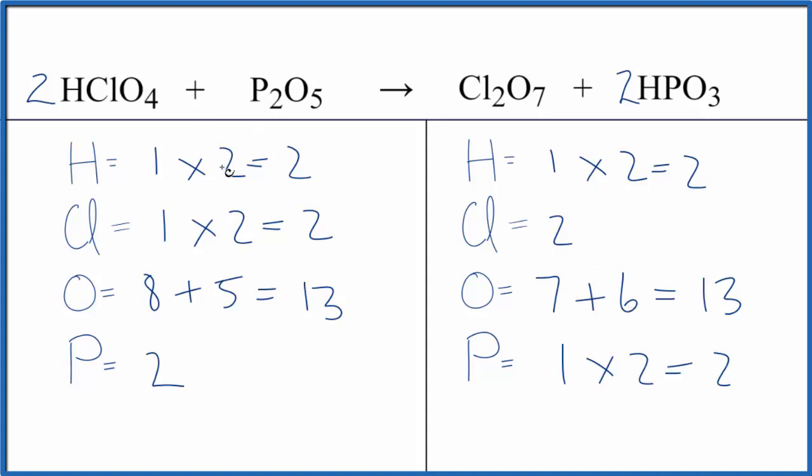I thought this was going to be a lot more difficult with all these oxygen atoms everywhere. But this is the balanced equation for the reaction HClO4 plus P2O5. This is Dr. B with the balanced equation for HClO4 plus P2O5. Thanks for watching.